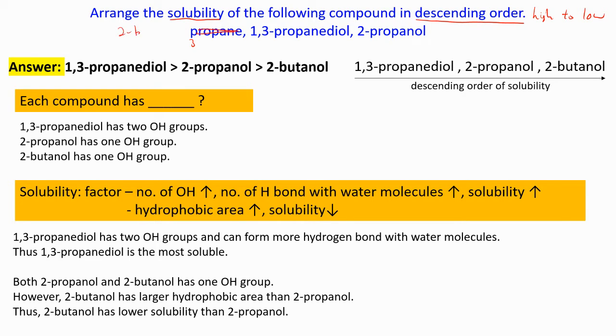So we have propane - oh it's not propane, it should be 2-butanol. 2-butanol means 4-carbon 1-OH, 1,3-propanediol is 3-carbon 2-OH, and then 2-propanol is 3-carbon 1-OH.